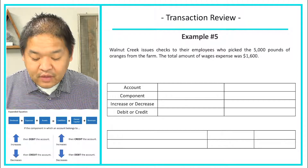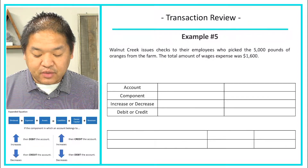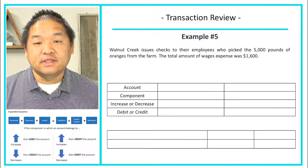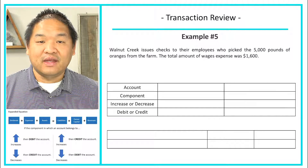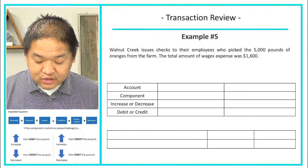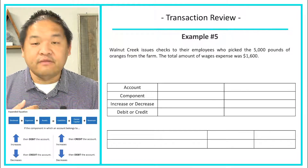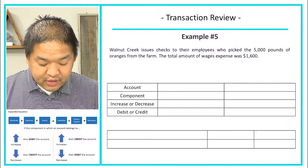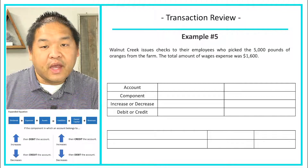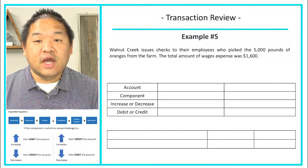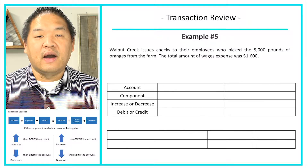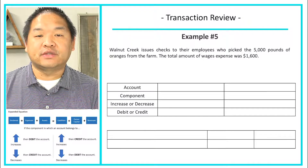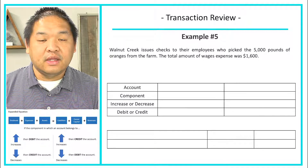Example number five: Walnut Creek issued checks to their employees who picked the 5,000 pounds of oranges from the farm. These are the employees that did the work of picking the oranges that we sold to the store. We gave up $1,600 of cash — the total wages were $1,600. It says we issued checks, so we paid them in cash. What's the exchange? We got their services — employees provide their time in exchange for cash.